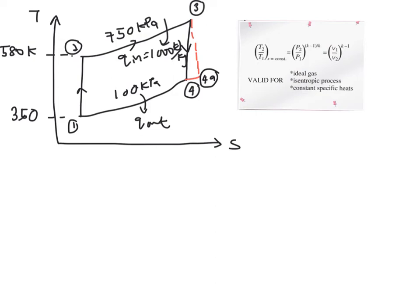All right, next is to find your backward ratio, which is the definition of backward ratio is equal to the work of your compressor divided with the work of your turbine.